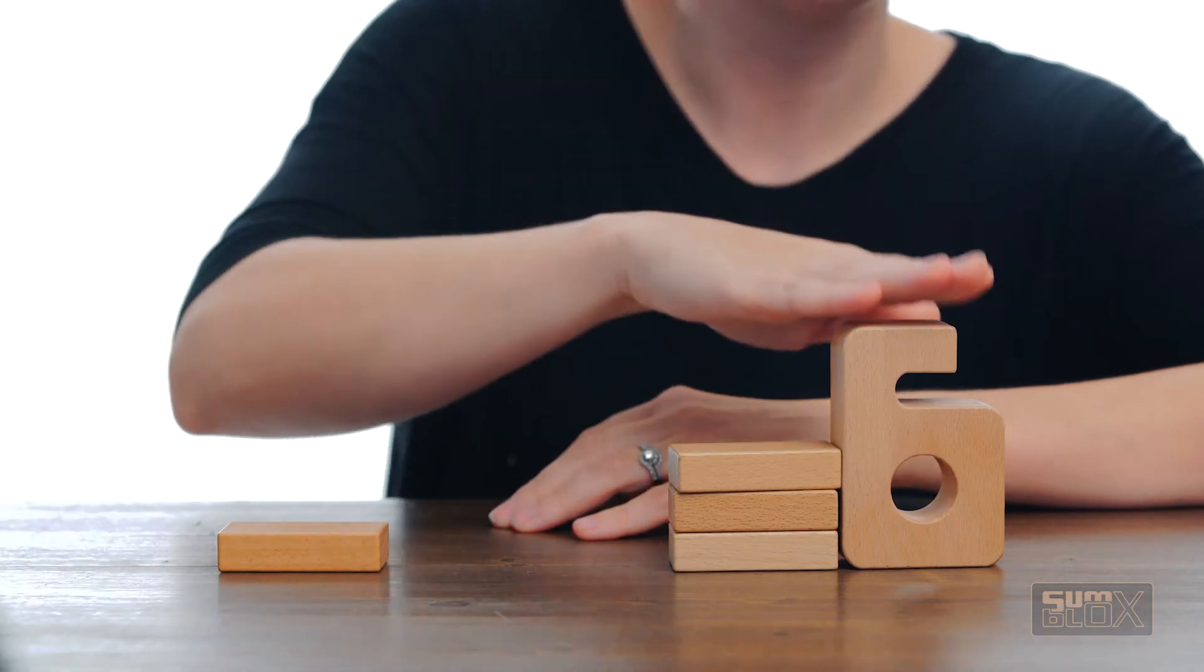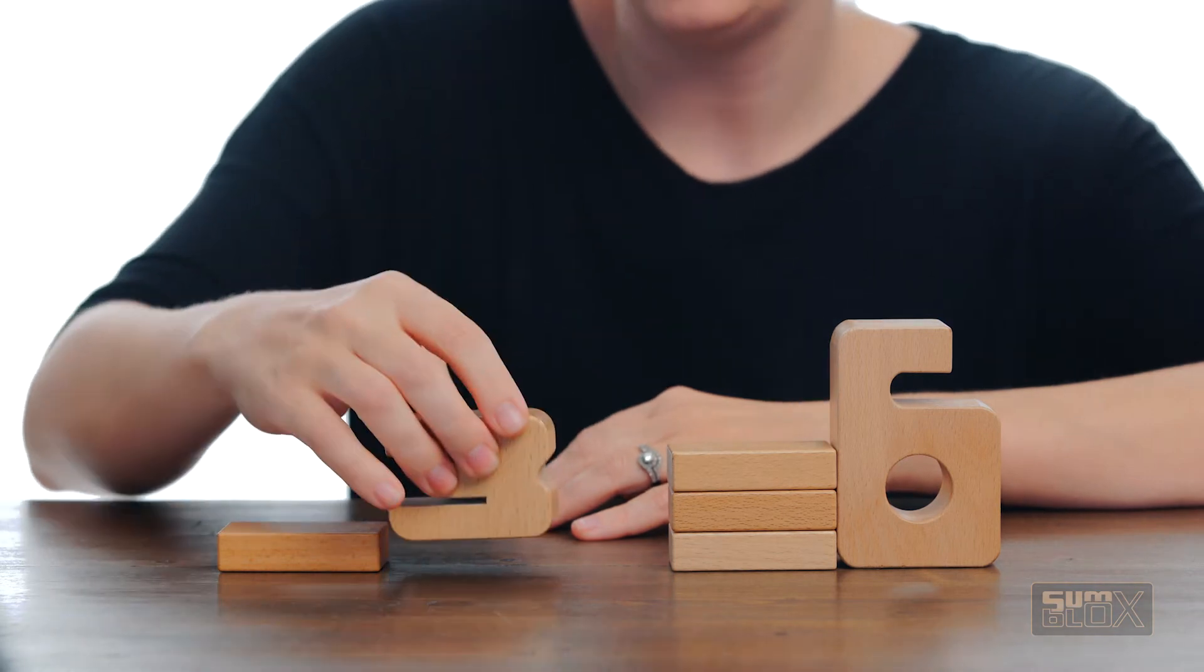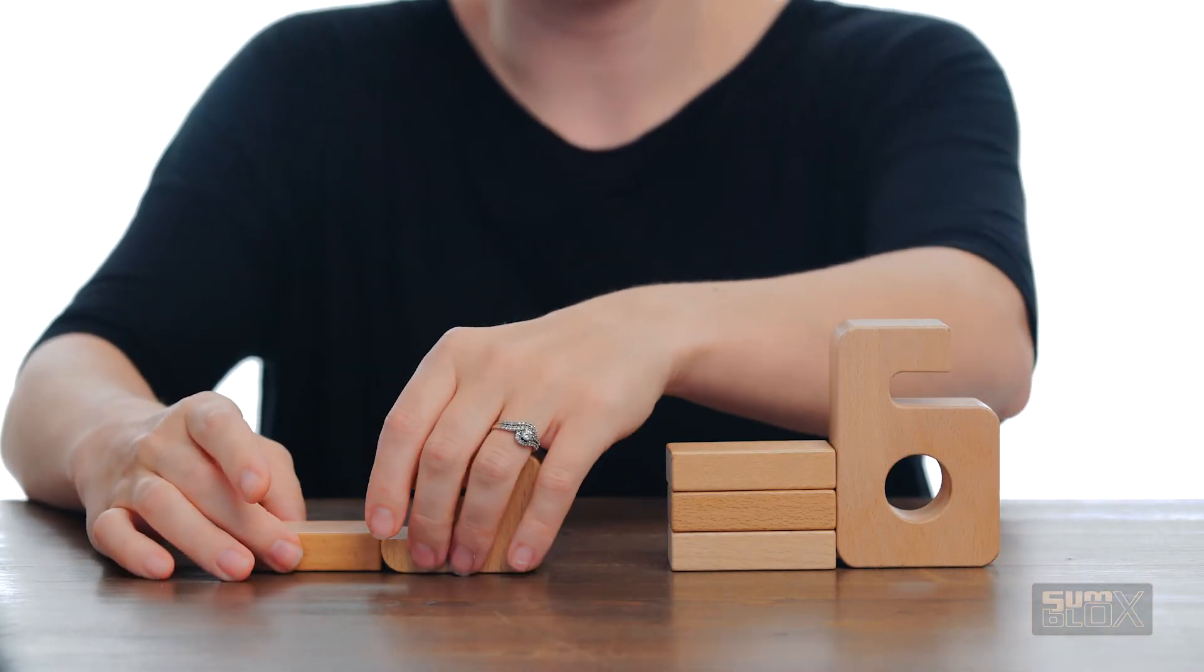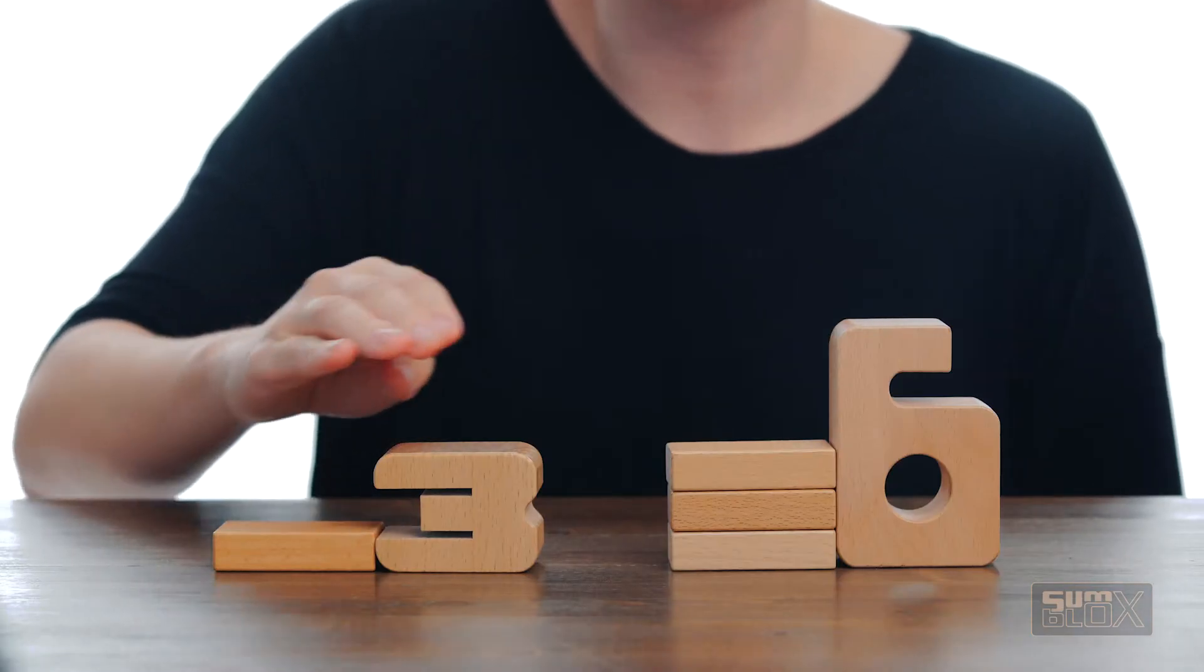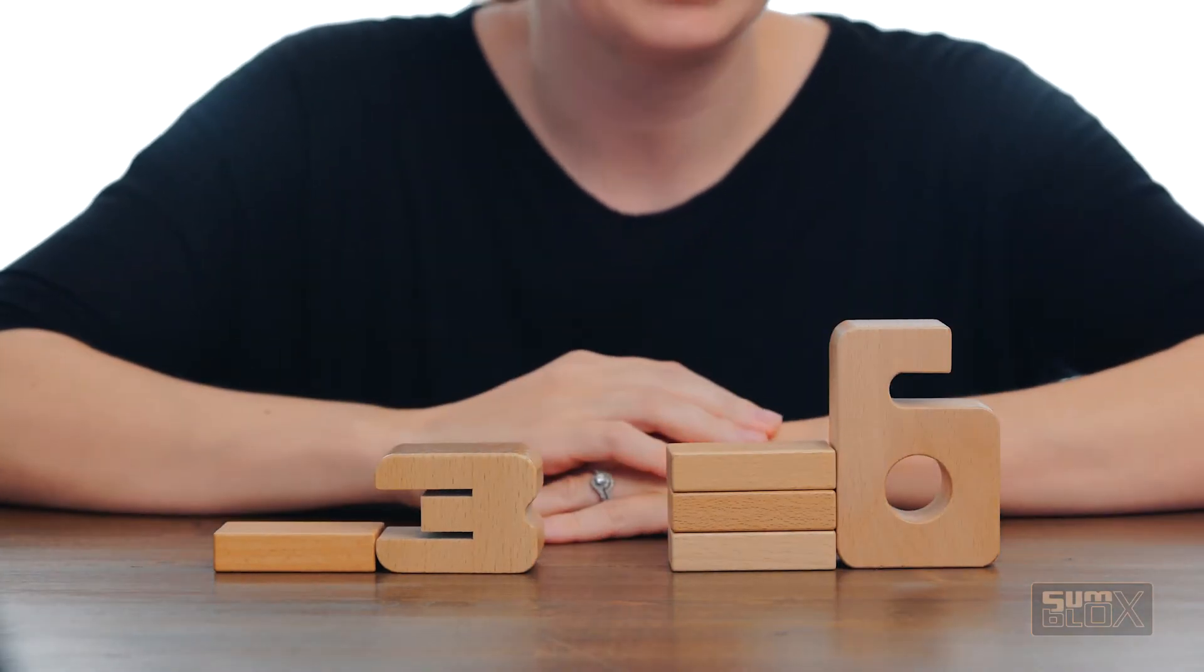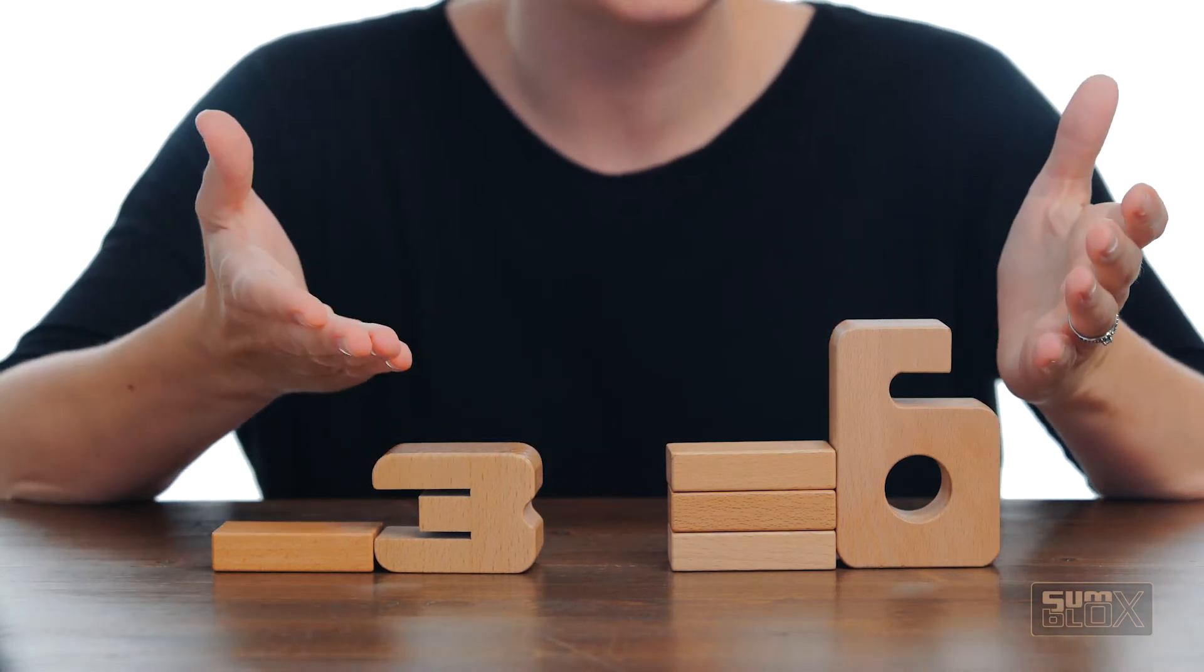If we have a container over here that is a 6 and a container over here that is a 3, so we have 3/6 and 1/3, we can't add them together because they have different denominators or different sized containers.